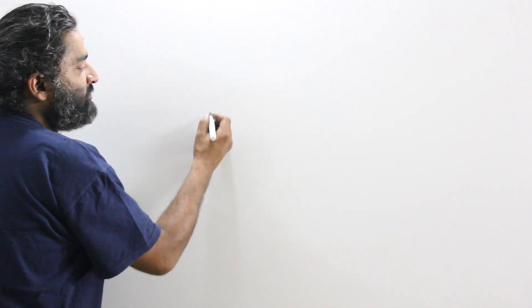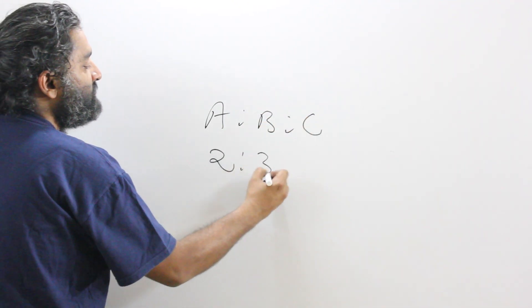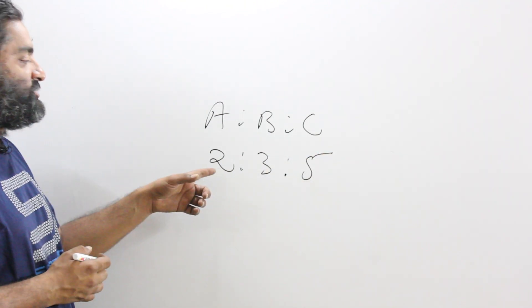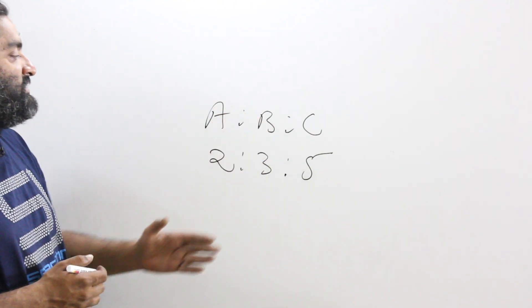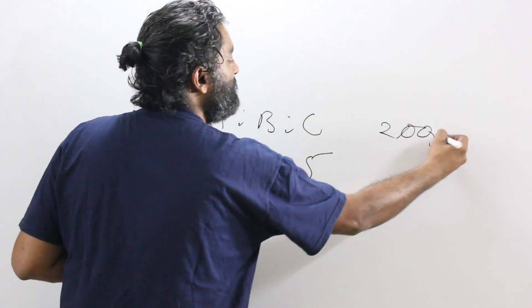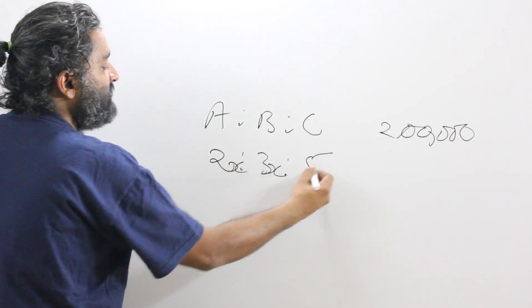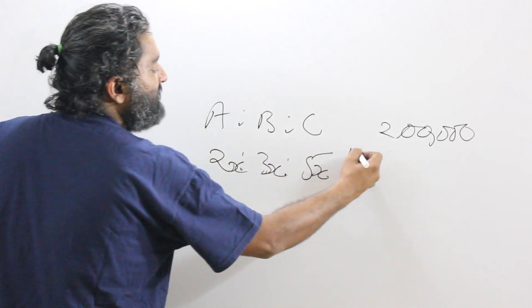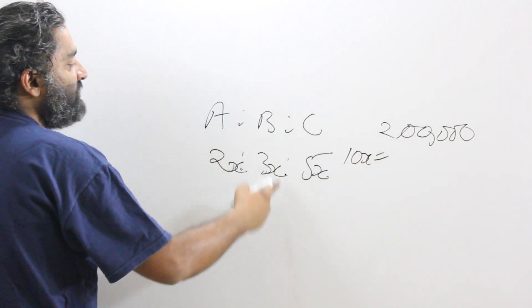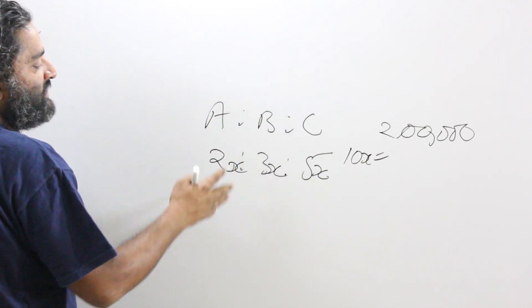I just want to repeat that point once again. Let's say the landlord's property is to be divided in this ratio, 2 is to 3 is to 5 between his 3 sons. And the total is given to me as 200,000. One way we did it already. This total will become 10x. I make 10x equal to 2 lakhs. I get the value of x. I get the value of a, b, and c.